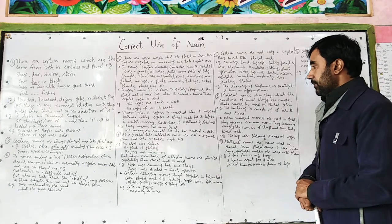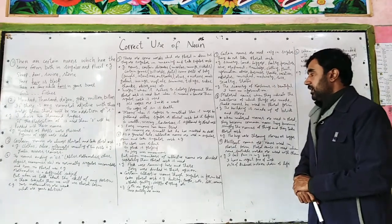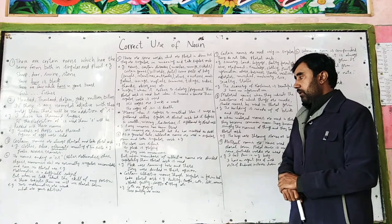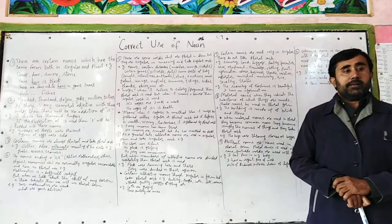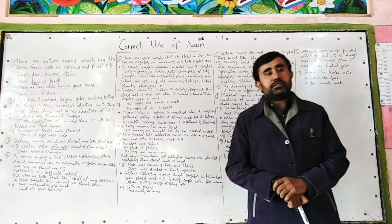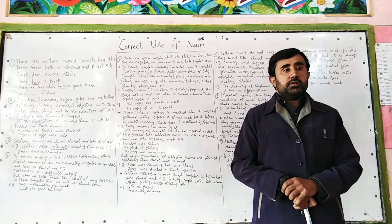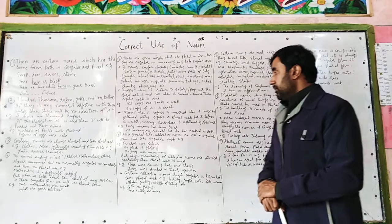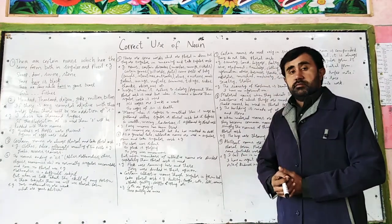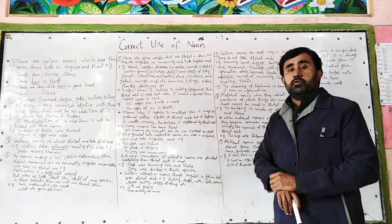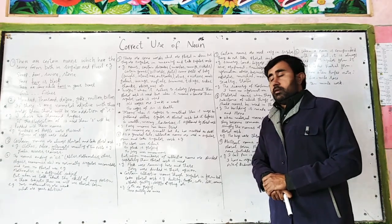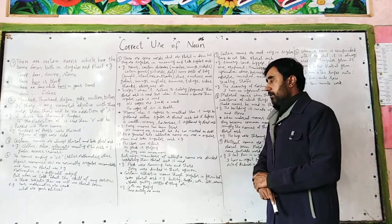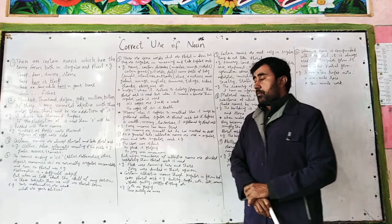The other rule: as a general rule, collective nouns are used in singular form and take singular verb. For example: 'The class was silent' — the collective noun 'class' takes singular verb. 'The flock is grazing in the field' — 'flock' is a collective noun taking singular verb.